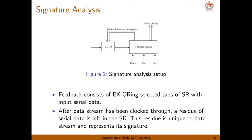A typical setup is shown here. There is an XOR gate and an N-bit LFSR — a linear feedback shift register containing D flip-flops and XOR gates. The output of the circuit under test is fed as input to this block. Feedback is taken from selected taps of the shift register, XORed with the input serial data. After the data stream has been clocked through, a residue of serial data is left in the shift register. This residue is unique to the data stream and represents its signature.